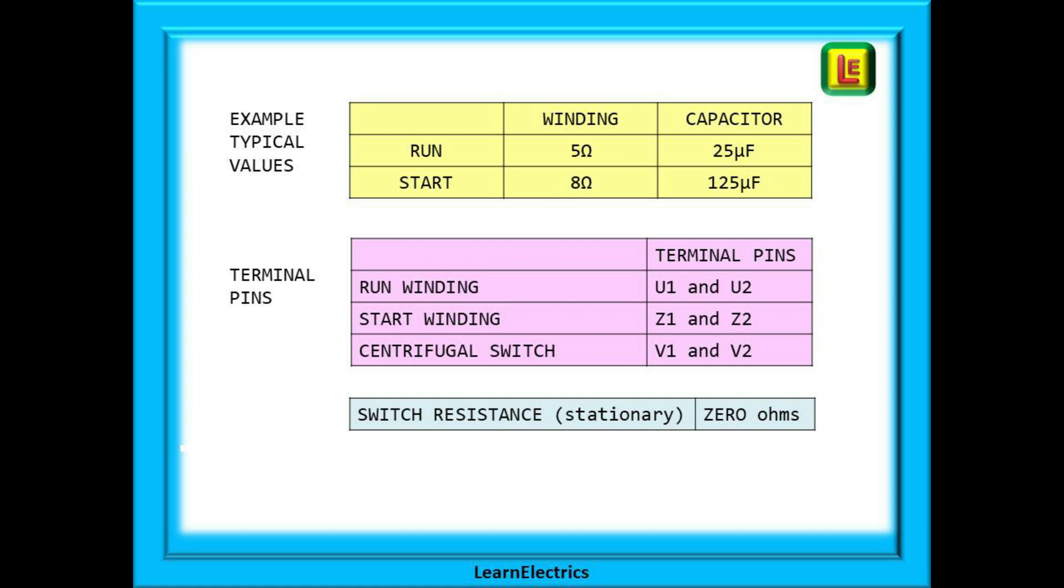If the run winding was about 5 ohms then the start winding may be around 8 ohms. A 25 microfarad capacitor may be used for the run mode and a capacitor of 125 microfarad for the start phase. If you measure across the switch this should read zero ohms whilst the rotor is stationary.